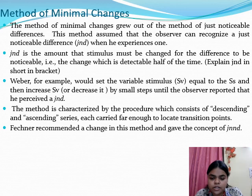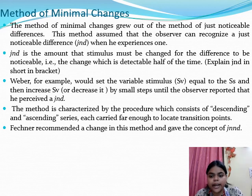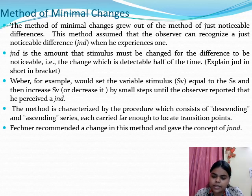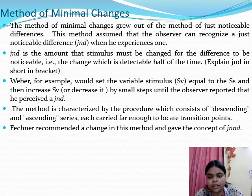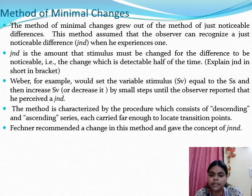The method of minimal changes grew out of the method of just noticeable difference. JND, or just noticeable difference, is the difference threshold — that is, the least amount of difference that the subject can detect 50% of the time. This concept was given by Weber. He explains this concept with an example: the variable stimulus and standard stimulus are kept equal initially, and then gradually, by small steps, the variable stimulus is either increased or decreased, until the subject says they have detected a change. That level is the JND, the just noticeable difference.